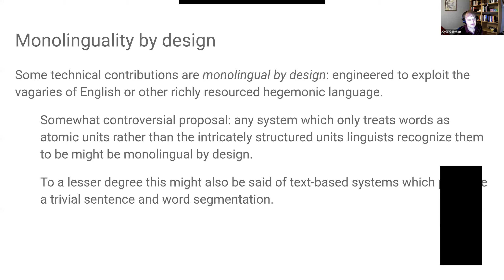To a lesser degree, the same critique might be said of text-based systems which assume that word and sentence segmentation is trivial. These systems are not going to do well faced with a language like Thai, which doesn't have orthographic word indication and often doesn't even have sentence indication. No matter what you do in a language like Thai in its script, you're going to have to deal with a non-trivial amount of error in segmentation, even if you build a statistical machine system to do the segmentation. There's still going to be a high rate of error, that error is going to propagate, and your system is going to fall down.